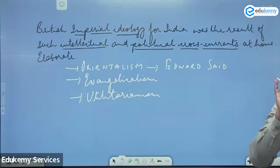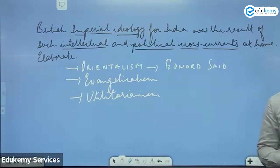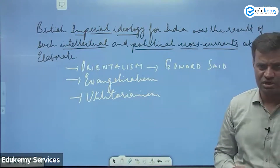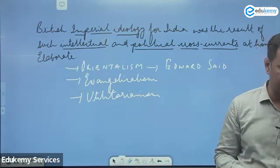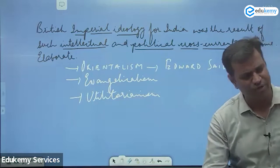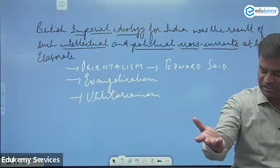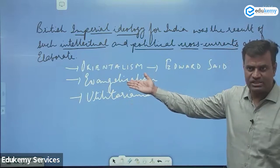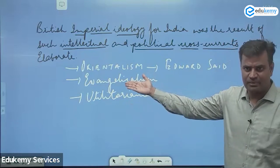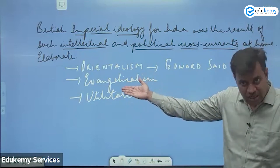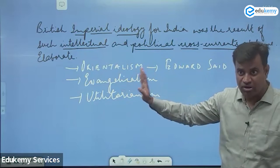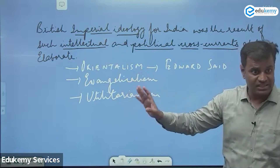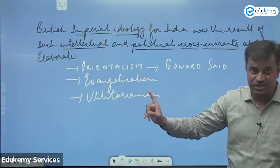You can give many examples but give only one or two — Asiatic Society, Sanskrit College at Banaras, Calcutta Madarsa. Even land revenue settlement — Permanent Settlement was marked by Orientalism. Permanent Settlement was even supported by Raja Ram Mohan Roy, though we know it was not ultimately beneficial for the British.